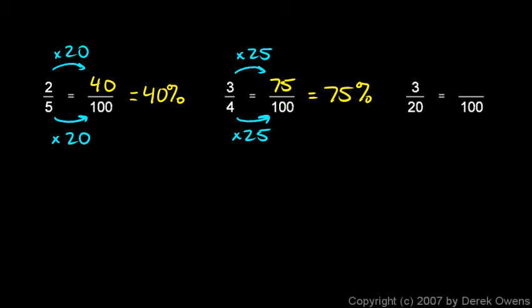And then the last one: 3/20 is how many hundredths? Again, we think 20 times what gives me 100? 20 times 5 is 100, so I'm going to multiply the numerator times 5. These little arrows and numbers that I'm drawing here, you don't need to write those on your page—you can do this in your head. I'm just trying to make it clear what's going on in my mind. You can do this mentally without writing it down. Just say in your head, 3 times 5 is 15. You get 15/100, which equals 15%.